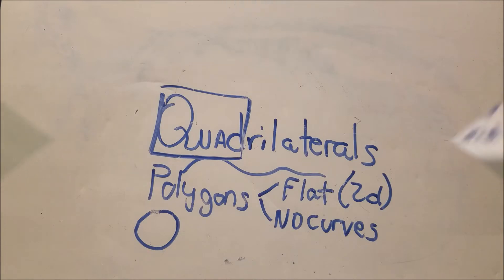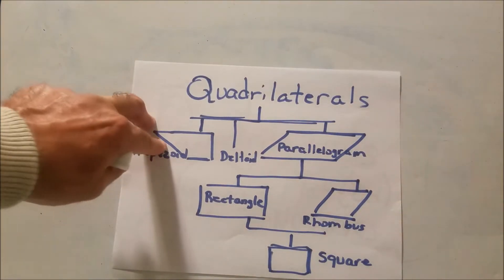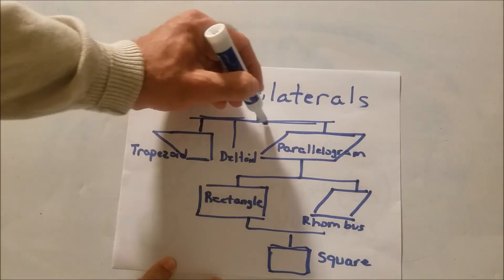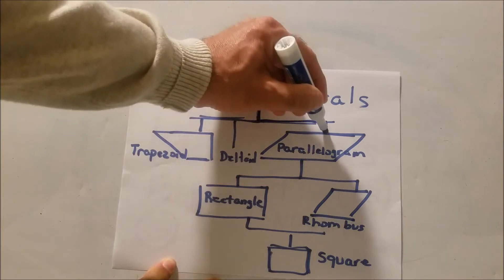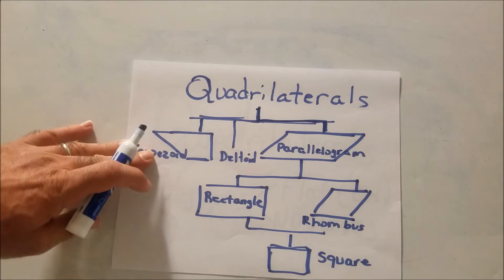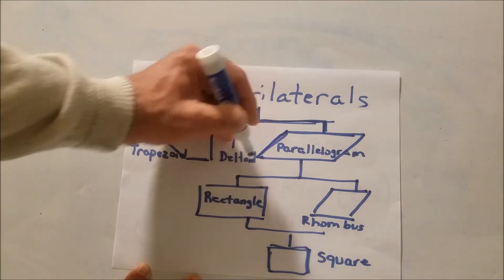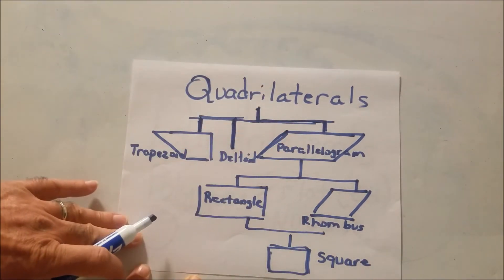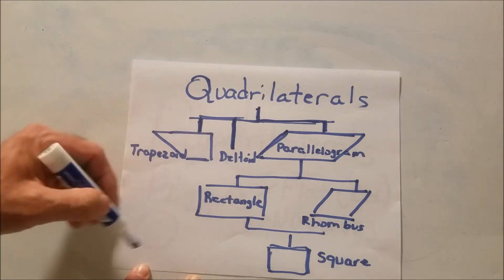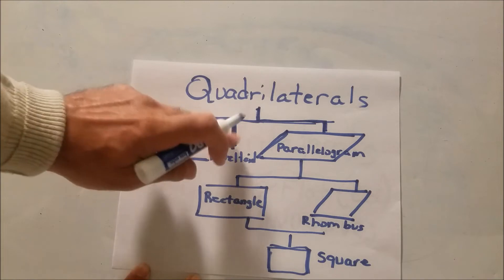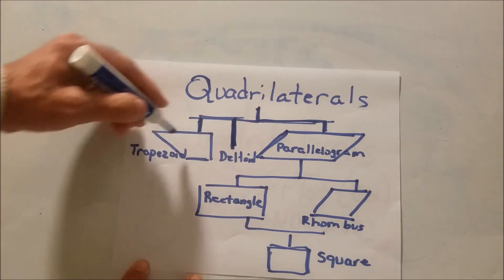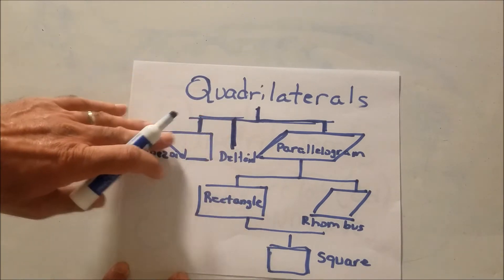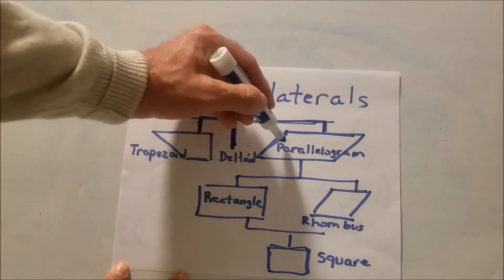We're going to look at the hierarchy of quadrilaterals — four-sided figures. It's like a family tree showing how they're related. You can see a parallelogram on one branch. On the other side are a trapezoid and a deltoid, which is a kite. Trapezoid and deltoid are four-sided but not part of the parallelogram branch.